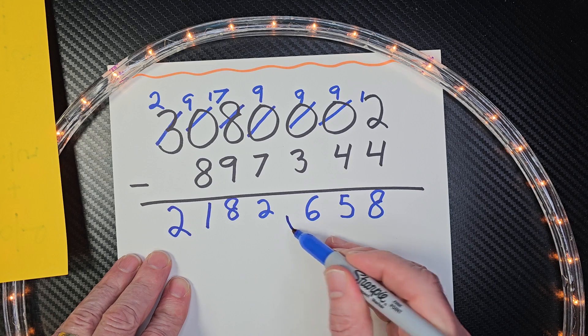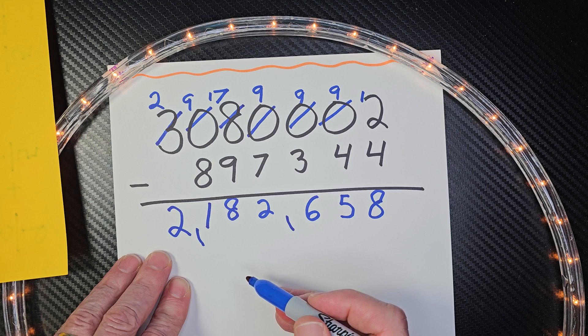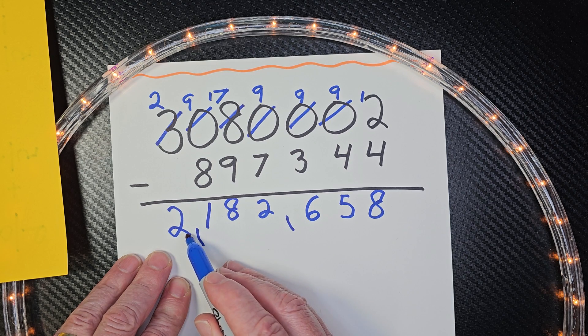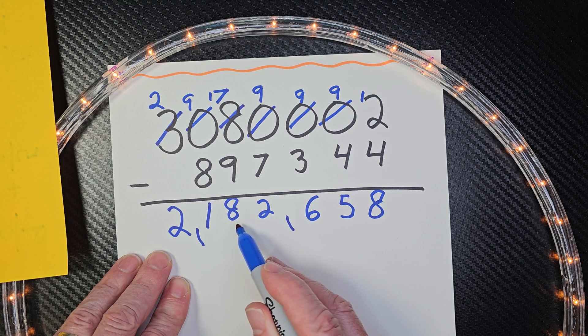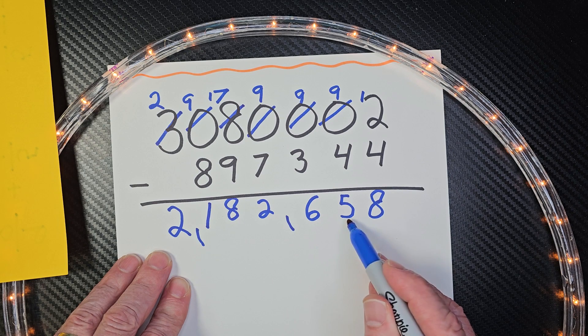That's a big number, isn't it? I'm going to put some commas right here. How would you say a number like that? That would be 2,182,658.